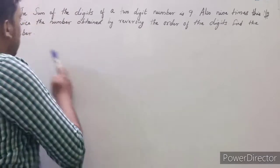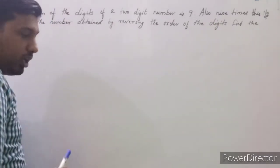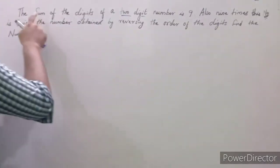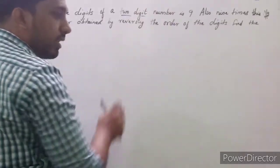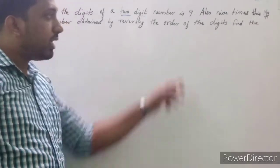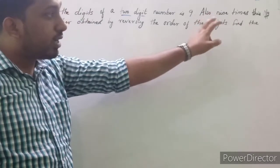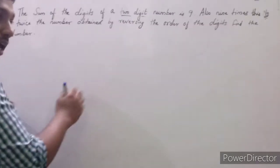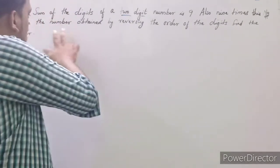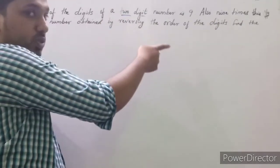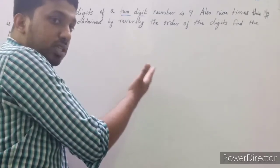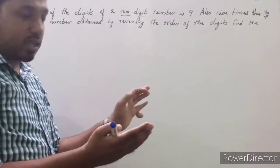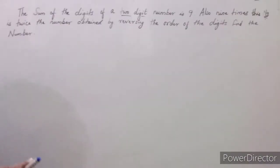Now this digit-based problem — read it very carefully. The sum of the digits of a two-digit number is 9. Also, nine times this number is twice the number obtained by reversing the order of the digits. So reversing means the tens place goes to the ones place and the ones place goes to the tens place. We need to find the number.